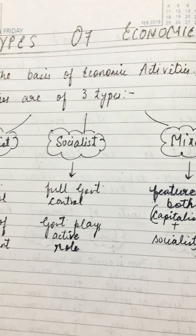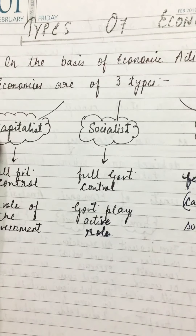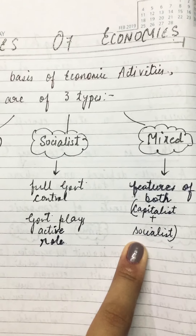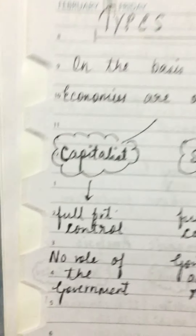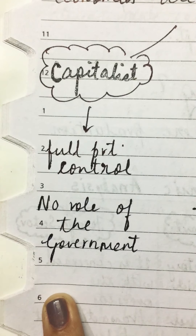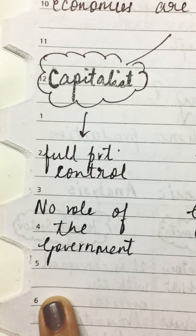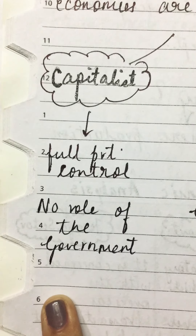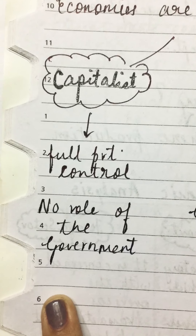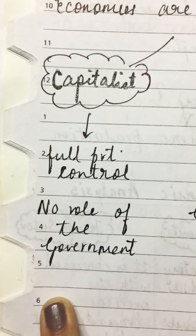The first economy is capitalist, the second is socialist, and the third is mixed. Let's start with the capitalist economy. A capitalist economy means an economy where there is no government hand in production and consumption - no rules and regulations, no control, no intervention, no interference.